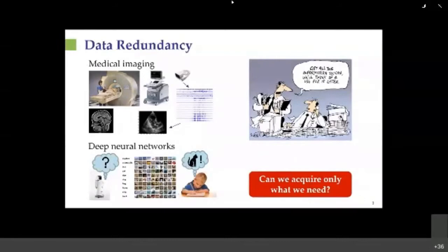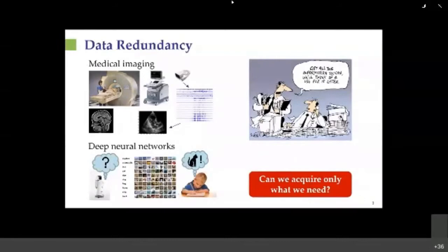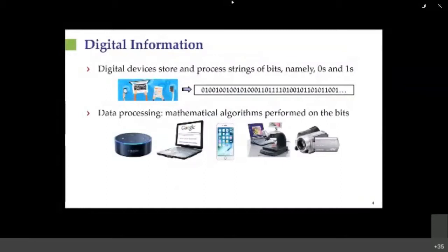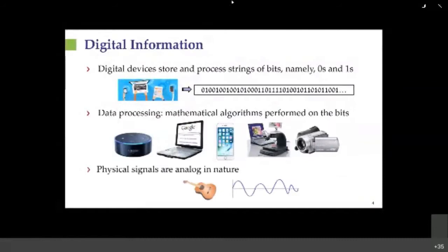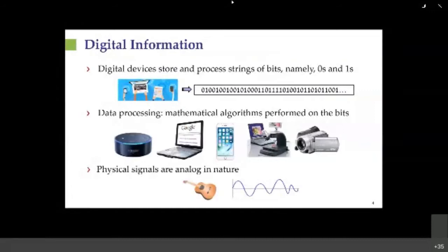This leads to the question of whether we can acquire only the information that we actually need. When we talk about data today, we typically refer to digital data—streams of bits processed by mathematical algorithms—which gives our digital devices their advanced capabilities. However, many signals we want to process are physical signals such as music and speech, which are continuous in time and amplitude. In order to process them digitally, we first have to convert them to bits through sampling, or analog-to-digital conversion.